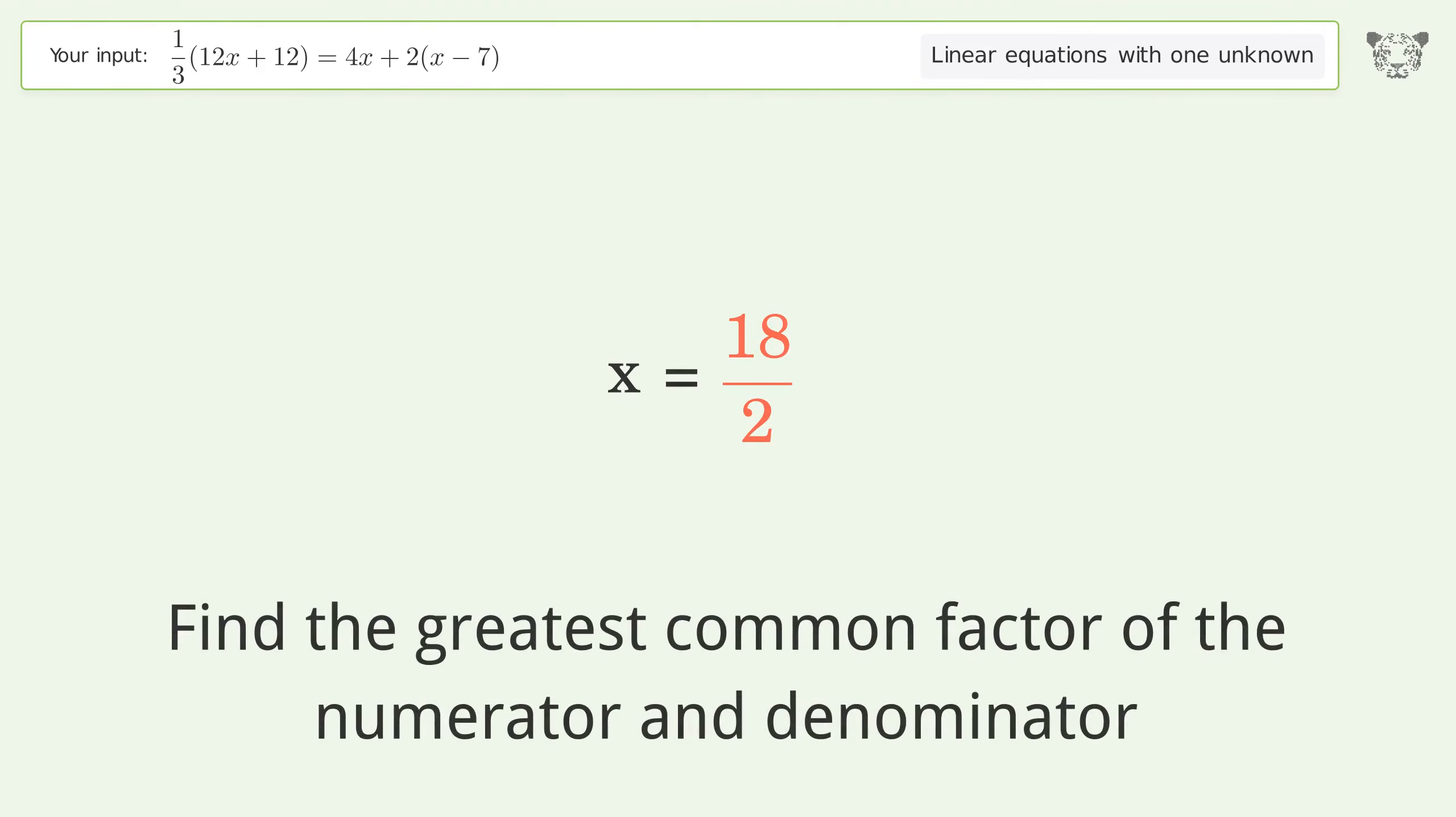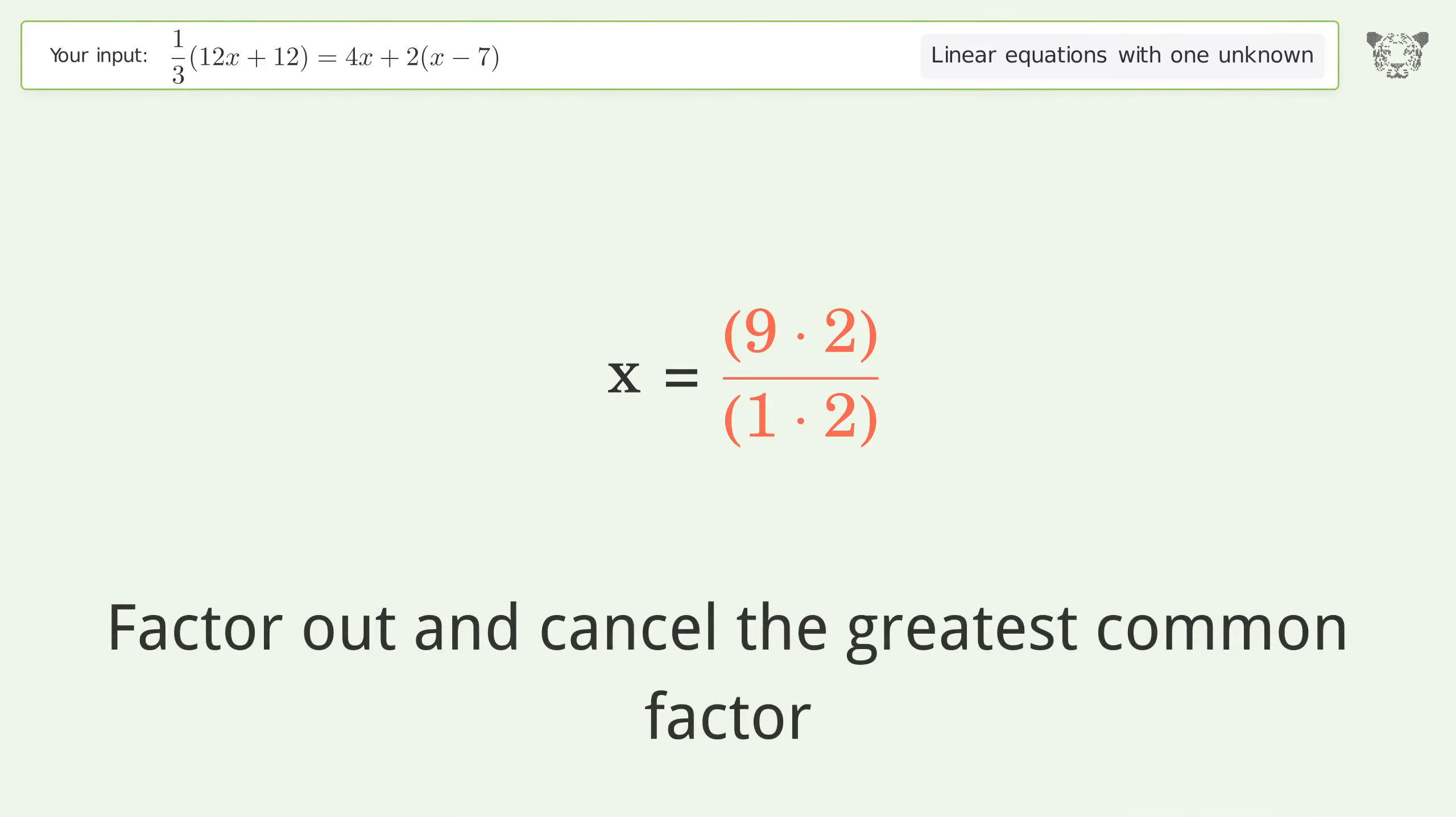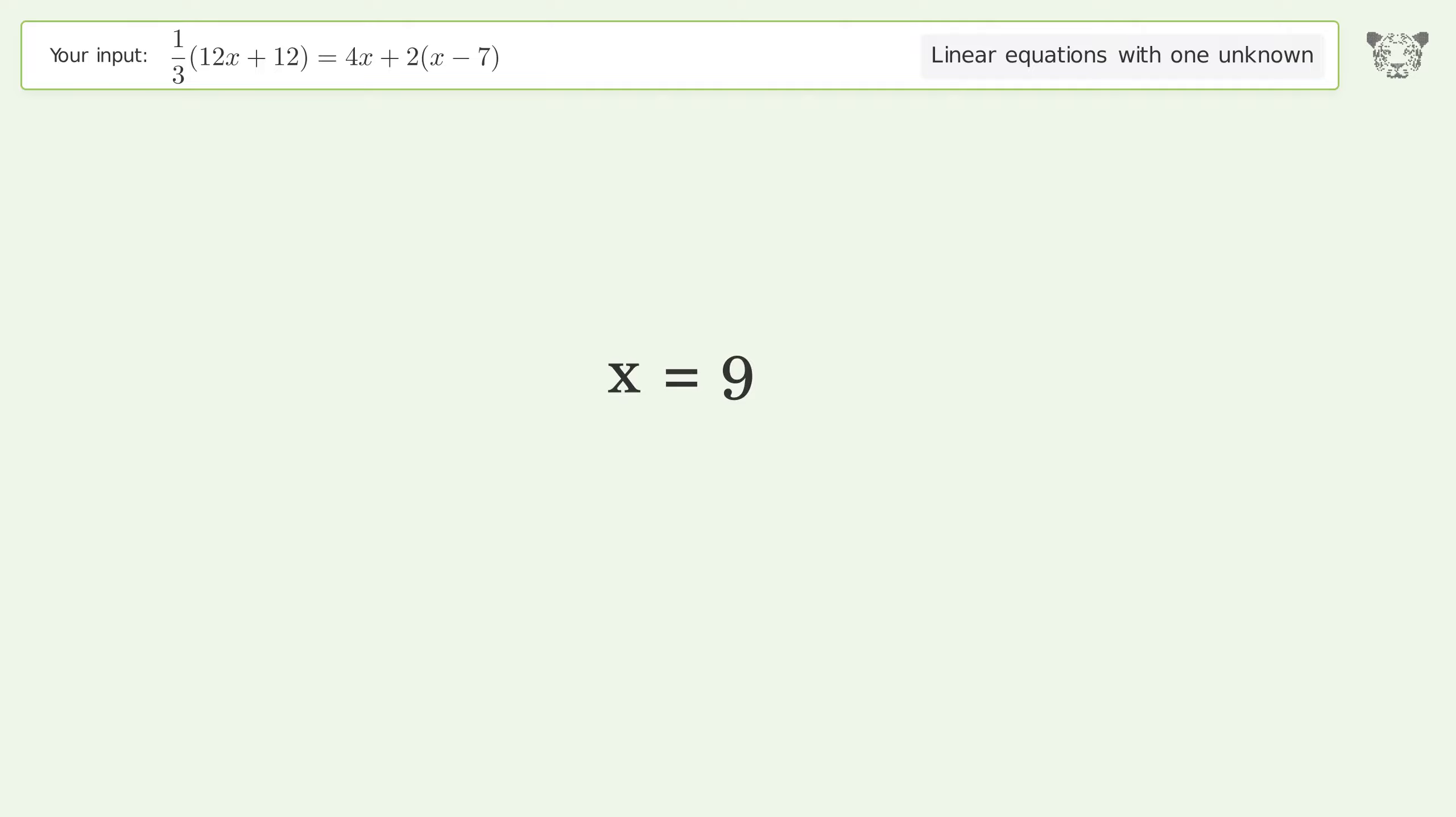Find the greatest common factor of the numerator and denominator. Factor out and cancel the greatest common factor. And so the final result is x equals 9.